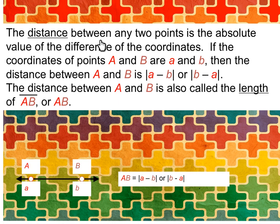The distance between any two points is the absolute value of the difference of the coordinates. If the coordinates of points A and B are a and b, then the distance between A and B is |a - b| or |b - a|. The distance between A and B is also called the length of segment AB, or AB.